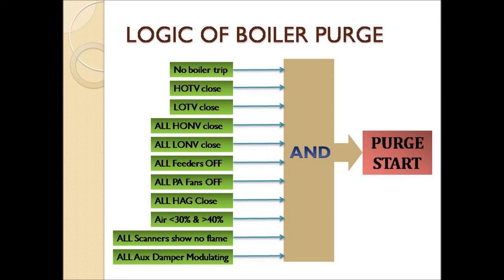This is the complete logic of boiler purging. Through this logic we can clearly understand the conditions and permissives of boiler purging. All these conditions are routed through an AND gate, meaning all of these conditions are required to go for boiler purging. If any one of these conditions does not meet, then we cannot go for purge start. Once all conditions are true, we can go for purge start and a 5-minute purging cycle will begin. During this 5-minute cycle, if any condition goes false, the purging will halt. In technical terms, if purge halts midway, it is called a purge interrupt.